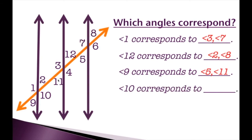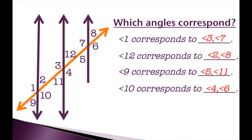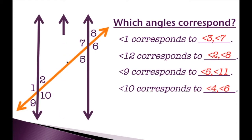And angle 10 corresponds to angles 4 and 6. Angle 10 is the bottom right angle in its group, angle 4 is also its bottom right angle in its group, and angle 6 is the bottom right angle in its group.